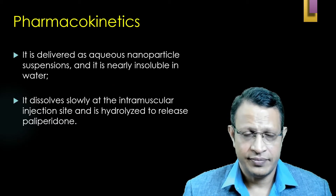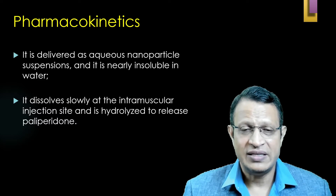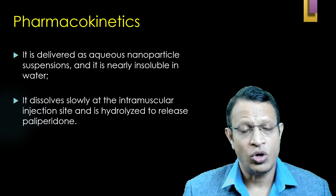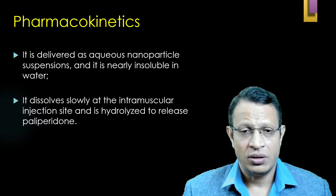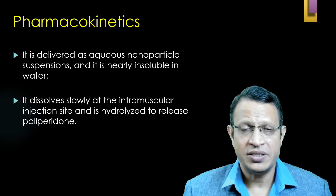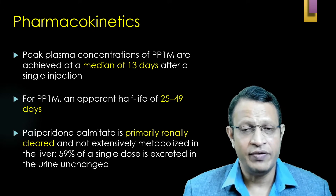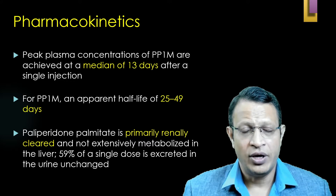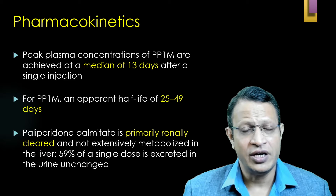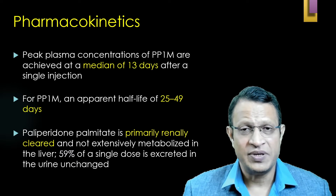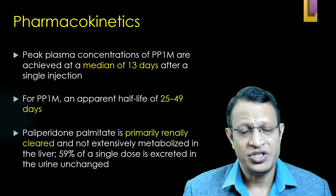Now let us understand the pharmacokinetics. Paliperidone palmitate is an aqueous nanoparticle suspension and it is nearly insoluble in water. However, it dissolves slowly at the intramuscular injection site. Once it is dissolved, it is hydrolyzed from paliperidone palmitate to the active ingredient paliperidone. The peak plasma level of paliperidone palmitate given once a month occurs at a median of 13 days after the single injection. The once-a-month injection has an apparent half-life of 25–49 days. Paliperidone palmitate is primarily excreted through the kidney and is not metabolized through the liver. 59–60% of the drug is excreted through the kidney unchanged in the urine.